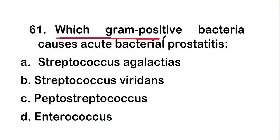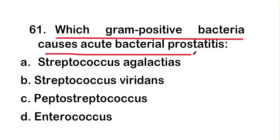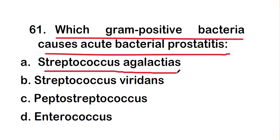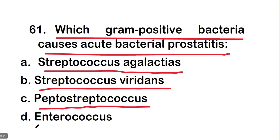The first question of this video is: which gram-positive bacteria causes acute bacterial prostatitis? Options are: Streptococcus agalactiae, Streptococcus viridans, Peptostreptococcus, or Enterococcus.